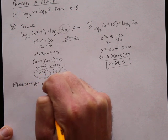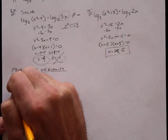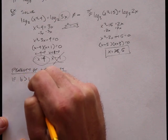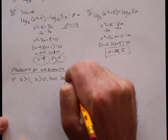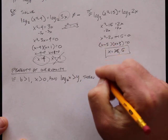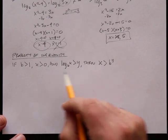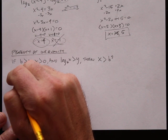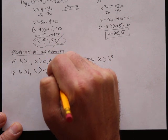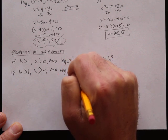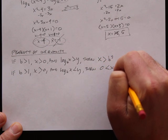Property of Inequality: if b is greater than 1 and x is greater than 0, and log base b of x is greater than y, then x is greater than b to the y power. Also, if b is greater than 1 and x is greater than 0, and log base b of x is less than y, then 0 is less than x which is less than b to the y power.